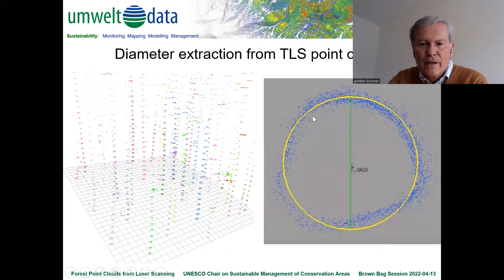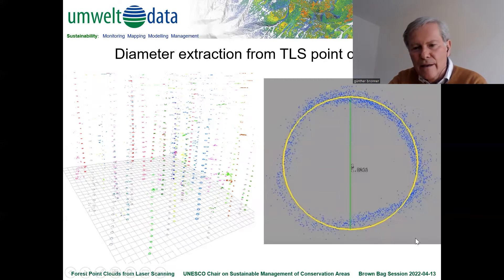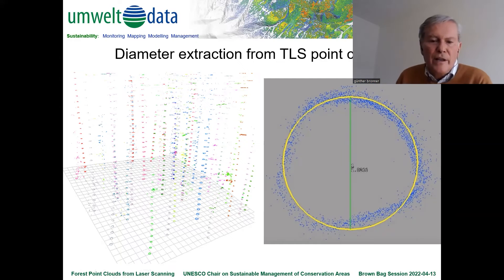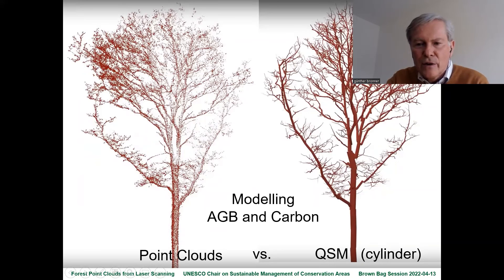If you derive a diameter from the point cloud, it can look like this: you perform cylinder fitting to obtain a cylinder model for the stem. On the left-hand image, you can see the diameters measured up the stem. So you don't only get the DBH at the standard 130 cm height — you get many diameters along the full stem.